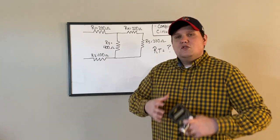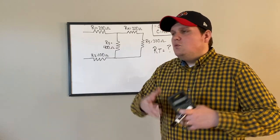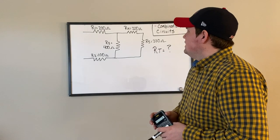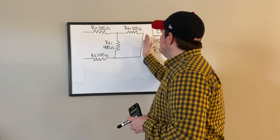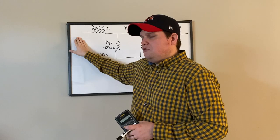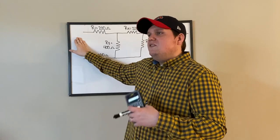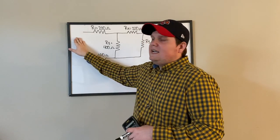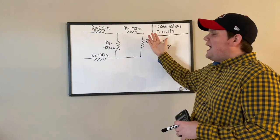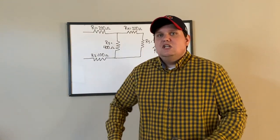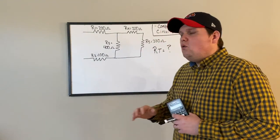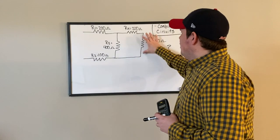The rule of thumb here is when you're breaking a combination circuit down, it's like you want to fold it this way to simplify it, and then when you go to work everything out you're going to fold it back out. When combining elements, we always want to start at the end that is opposite of where our source is going to be.